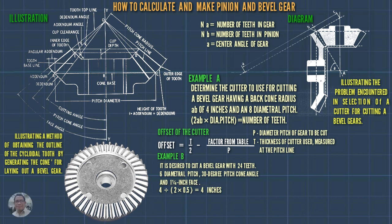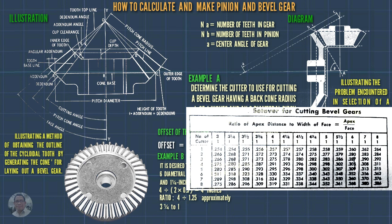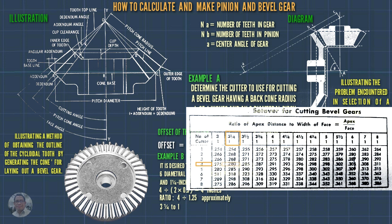The ratio is 4 divided by 1.5, or approximately 3.25 to 1. From the table, this corresponds to a number 4 cutter. The factor from the table for a 3.25 to 1 ratio is 0.248.